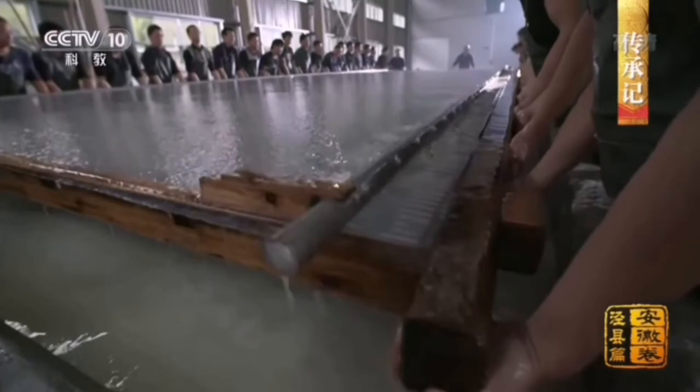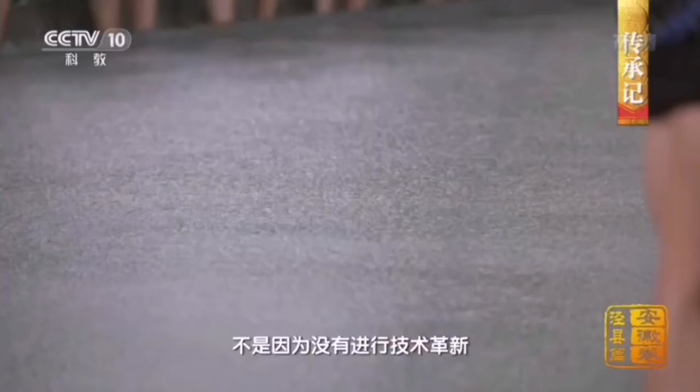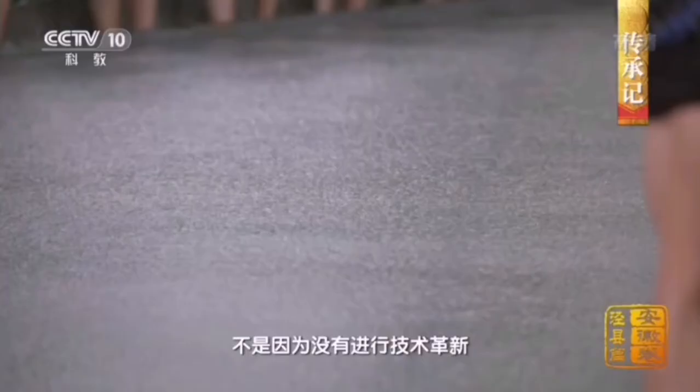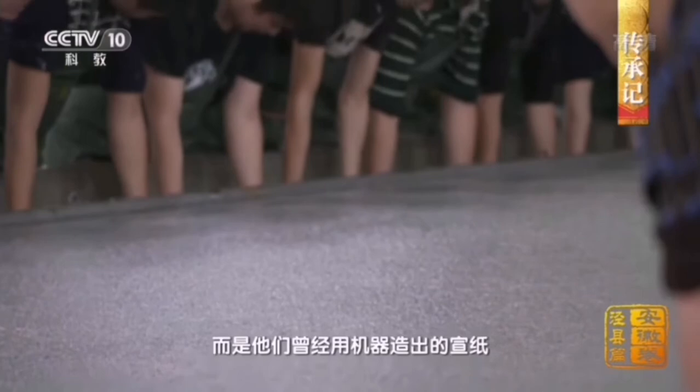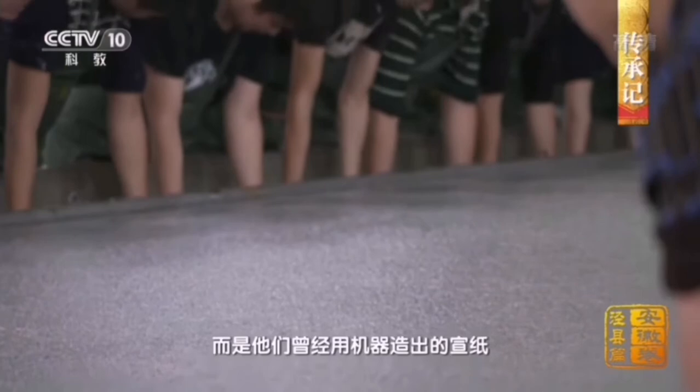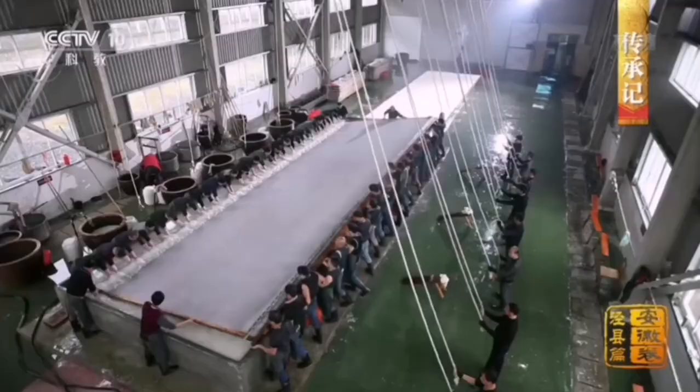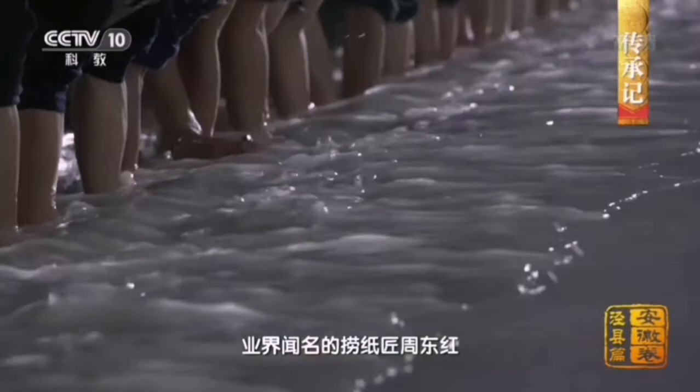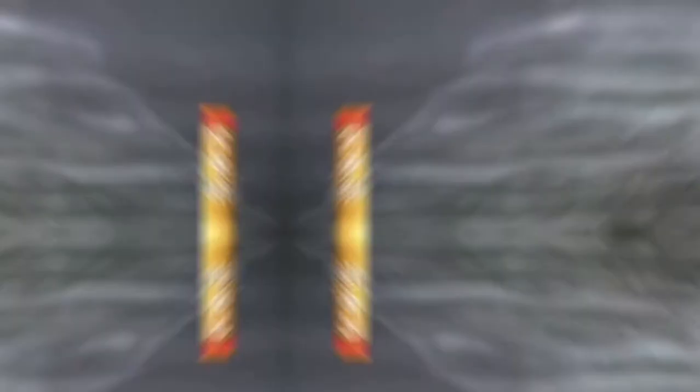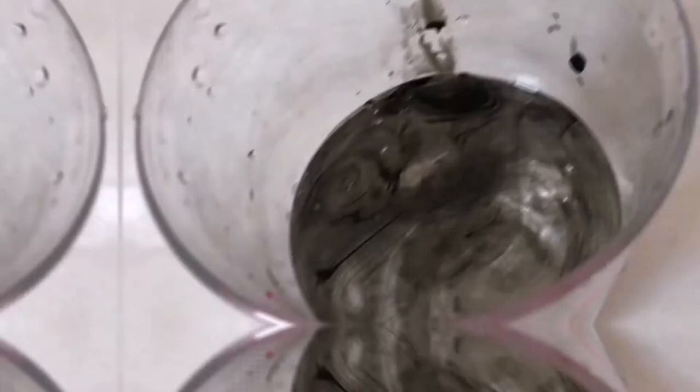Xuan paper can be categorized into three kinds by its ability to absorb ink and water. The first type is mainly used for gongbi, where details are focused. Shen xuan, or raw xuan, on the other hand, has more ability to absorb water. It will be easier for ink to blur on paper. It is suitable for xie yi painting. Another type is called ban shu xuan, or half-ripe xuan, which has intermediate absorbability.